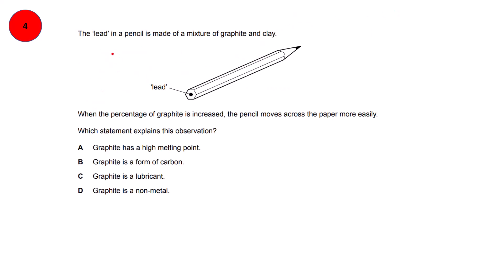Question number 4. The lead in a pencil is made of a mixture of graphite and clay. When the percentage of graphite is increased, the pencil moves across the paper more easily. You are increasing graphite and the result is that the pencil moves more easily — it has more lubricating effect. We have studied in the syllabus that graphite is used as a lubricant, so option C is correct for question number 4.